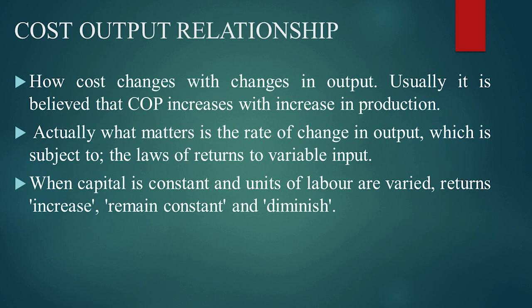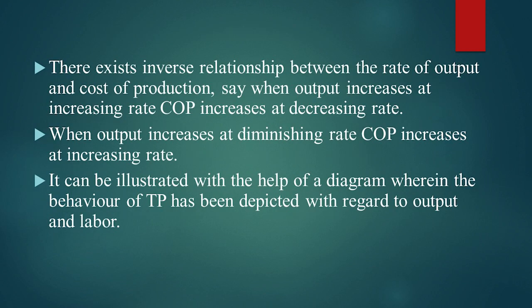Now, how does cost change with changes in output? It is believed that cost of production increases with increase in production. Actually, what matters is the rate of change in output, which is subject to the laws of returns to variable inputs. The variable input here is labor. When capital is constant and units of labor are varied, returns increase, remain constant, and diminish. There exists an inverse relationship: when output increases at an increasing rate, cost of production increases at a decreasing rate. And when output increases at a diminishing rate, cost of production increases at an increasing rate.